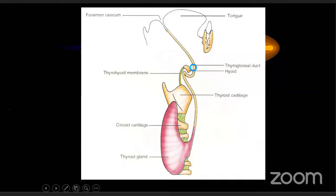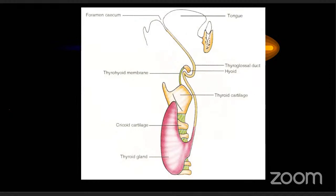The thyroglossal duct migrates caudally and on its way down takes close proximity just behind the body of the hyoid. Further down, along with the thyroid, there is C-cell formation, thanks to the neural crest cells. The neural crest cells give rise to C-cells, which are responsible for the production of calcitonin. The thyroid proper produces T3 and T4. This is very important developmental anatomy.